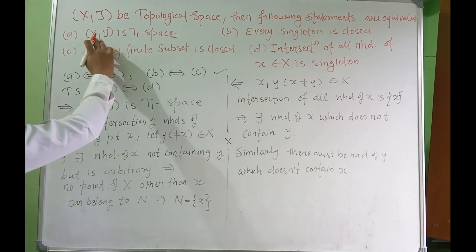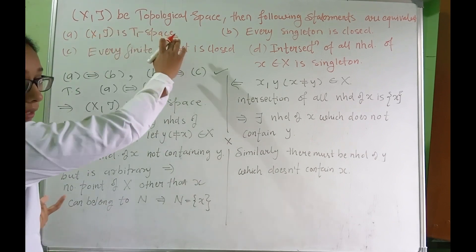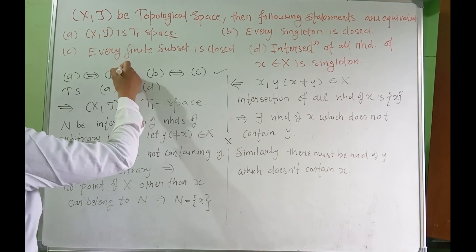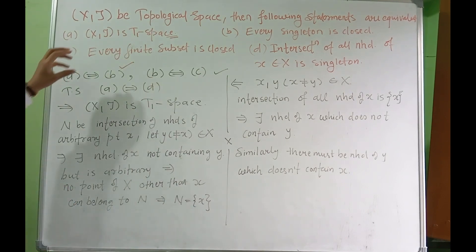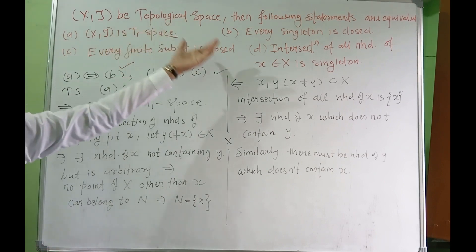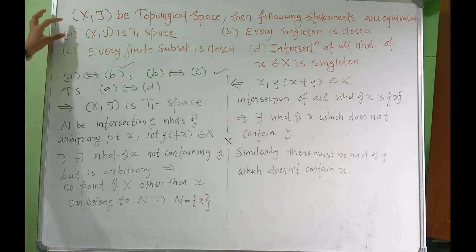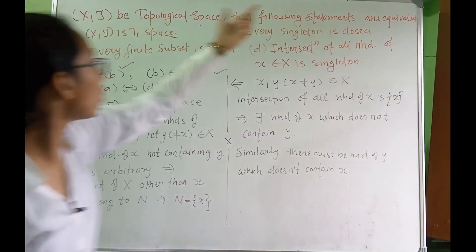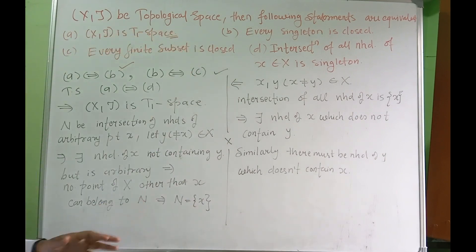We have already shown that (A) T1 space is equivalent to (B) every singleton set is closed. So A and B are equivalent. For A and C: every finite subset is closed — if every singleton set is closed, then any finite union of closed sets is also closed, so C follows from B, and trivially C implies B since a singleton is a finite subset. So A, B, and C are all equivalent.